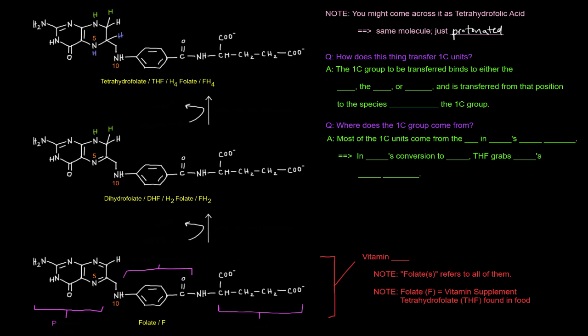They all have this pteridine ring over here, and this portion of the molecule here, that's the para-aminobenzoate, and then this portion over here that comes from glutamate. So one thing I want to mention is that folate is specifically vitamin B9. Often, you'll see folate or folates just as a term that is used to describe or mention all three of these. Folate or folates refers to all of these guys.